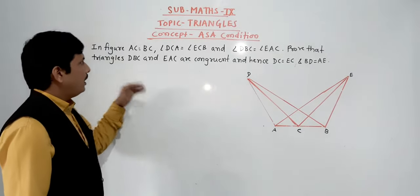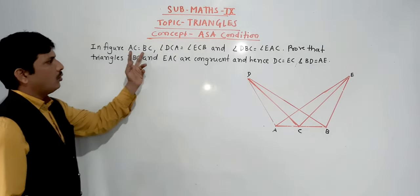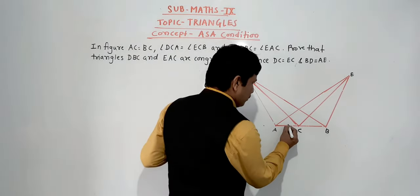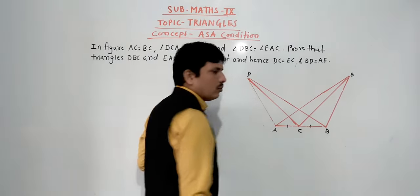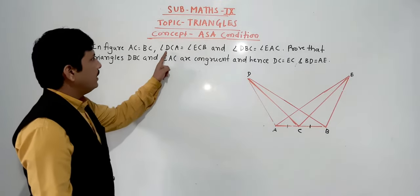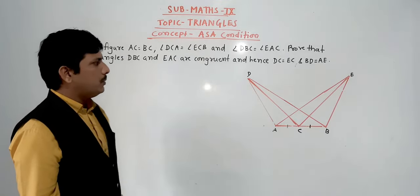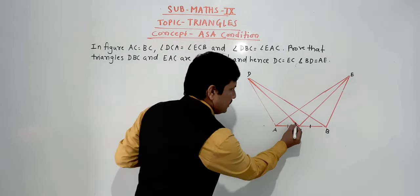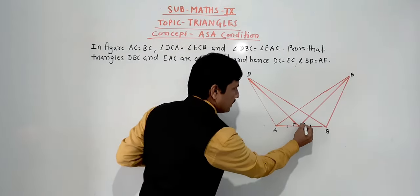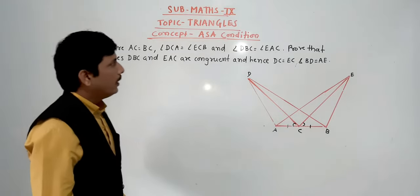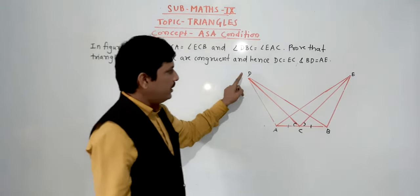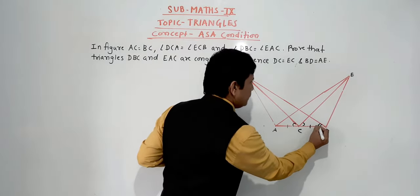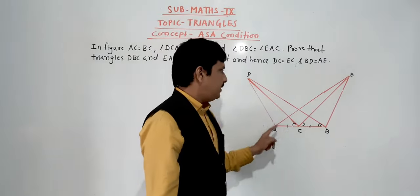So once again I am reading the question and the figure is also given. What is given: AC is equal to DC — so AC and DC are equal. Angle DCA is equal to angle ECB. And angle DBC is equal to angle EAC.